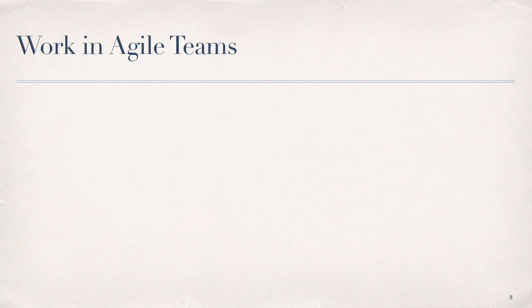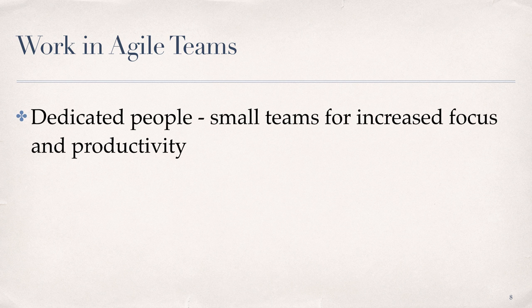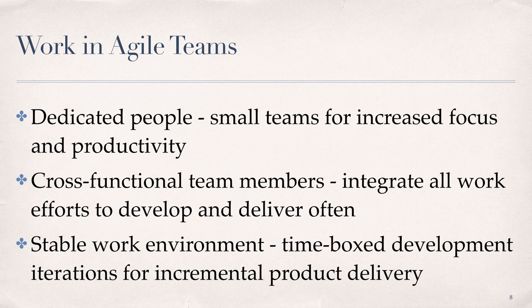Team members in Agile teams work to collaborate in various ways with all project stakeholders so they do not fall into the trap of many waterfalls instead of collaborative work through iterative and incremental development. Attributes of successful Agile teams include dedicated people working in small teams for increased focus and productivity, cross-functional team members able to integrate all work efforts to develop and deliver often, and a stable work environment using time-boxed development iterations for incremental product delivery.